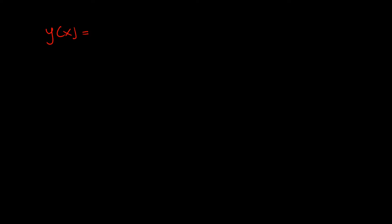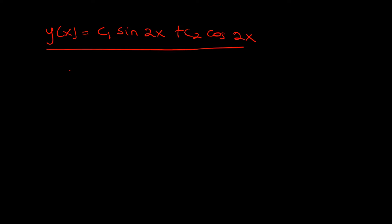Let's start with an example. We have a function y of x which equals c1·sine(2x) plus c2·cos(2x), where c1 and c2 are constants. We are supposed to show that this function is the solution to the differential equation y'' + 4y = 0.